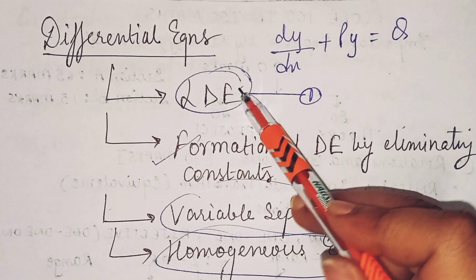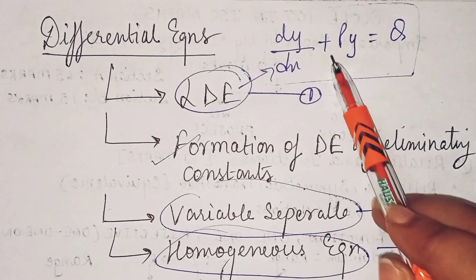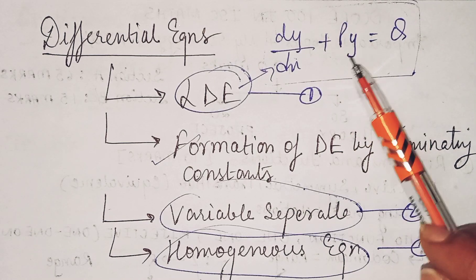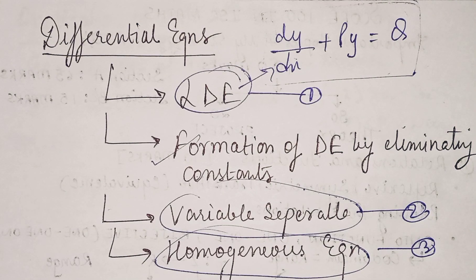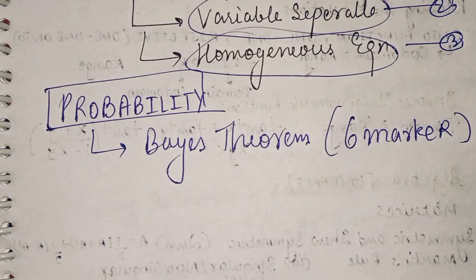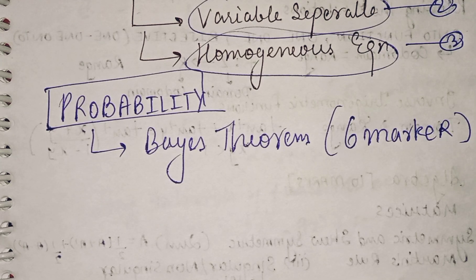The LDE form dy/dx + Py = Q often appears in exams. Find the integrating factor = e^(∫P dx) and solve accordingly. For Probability, Bayes' theorem will definitely come for 6 marks — it is easy and requires practicing at least five to six previous year questions. The remaining syllabus — Bernoulli trials — has been reduced. Left-out portions include independent and dependent events, conditional events, and laws of probability, which are all manageable.